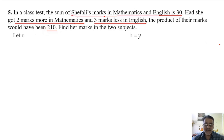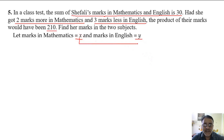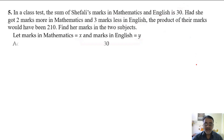We'll start with x. We take x for maths and y for English. So I am going to take two variables. The sum of these two is given in the question as 30. So x plus y is equal to 30.